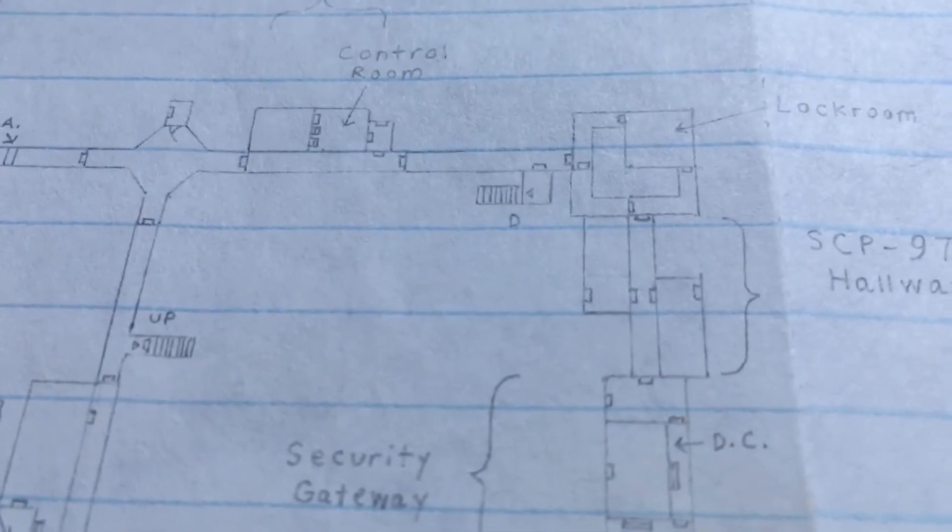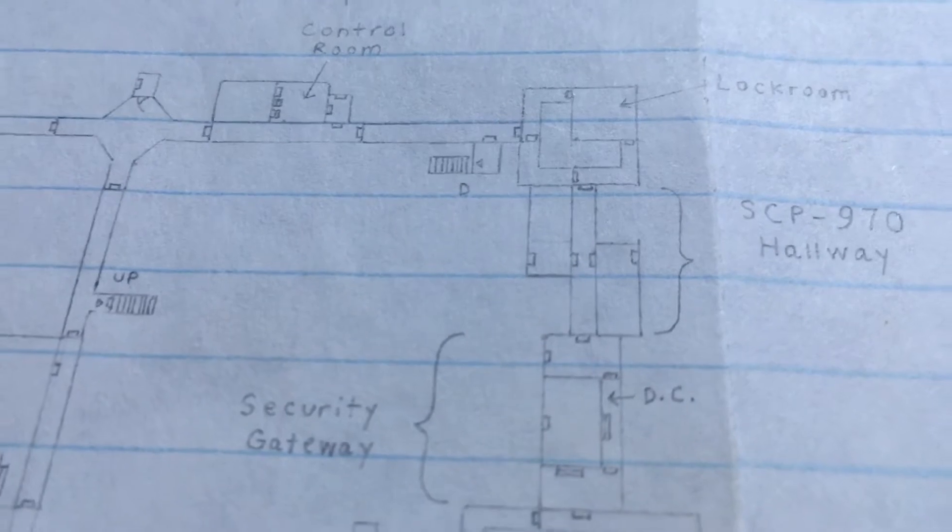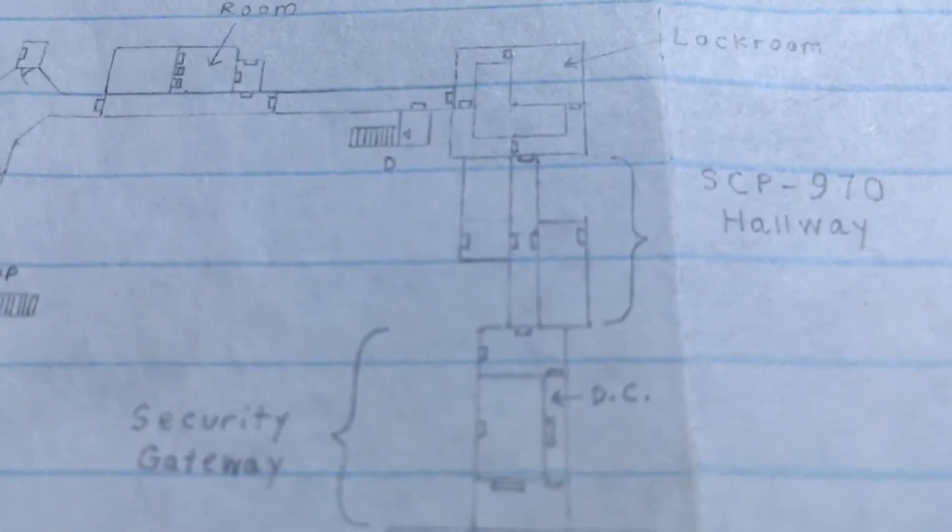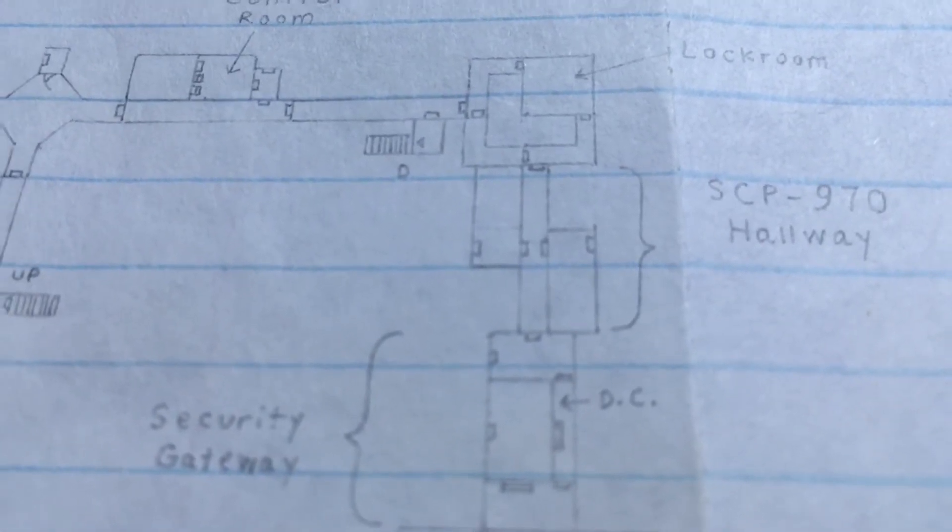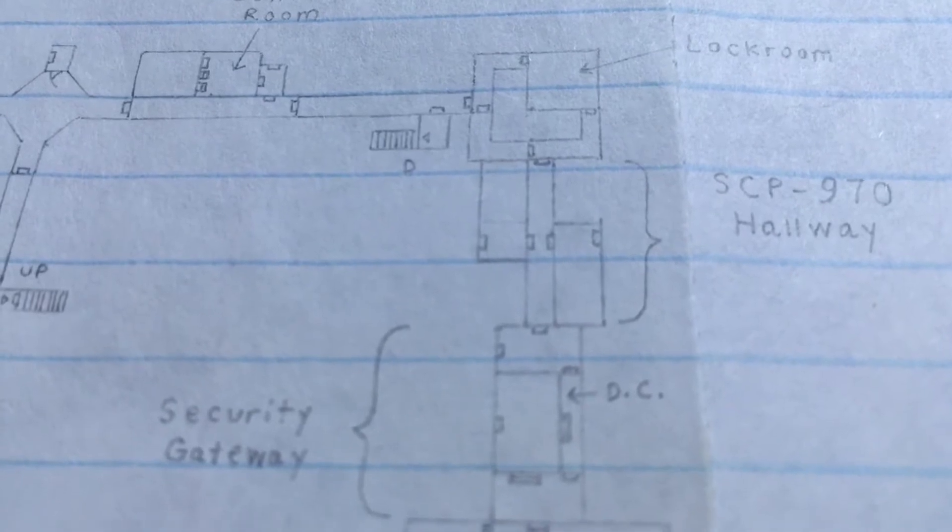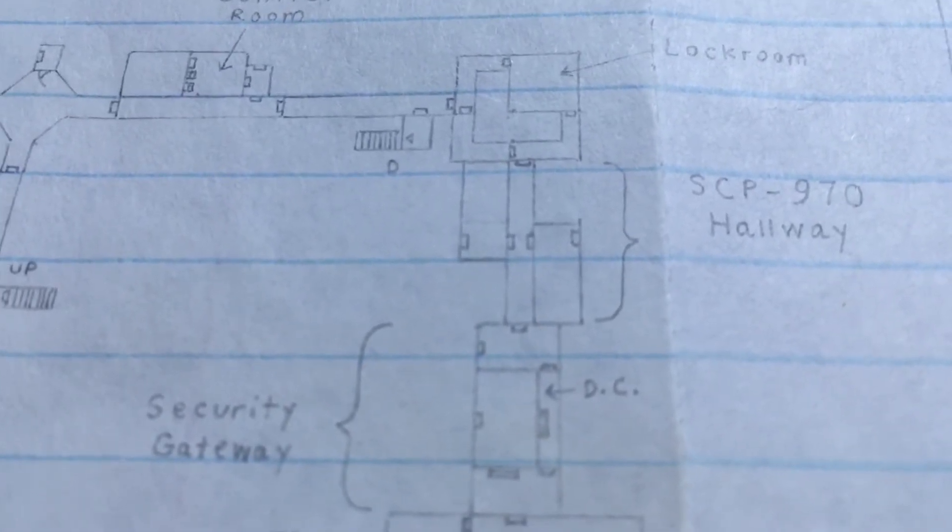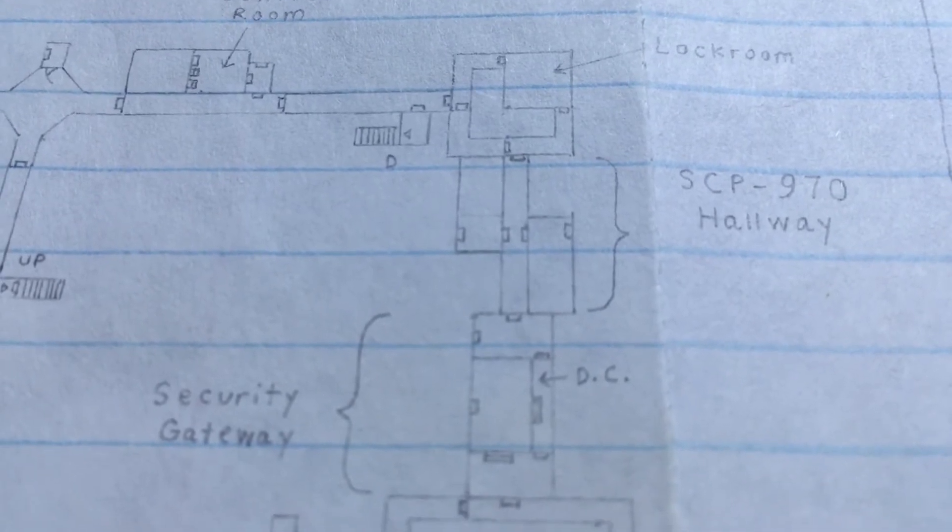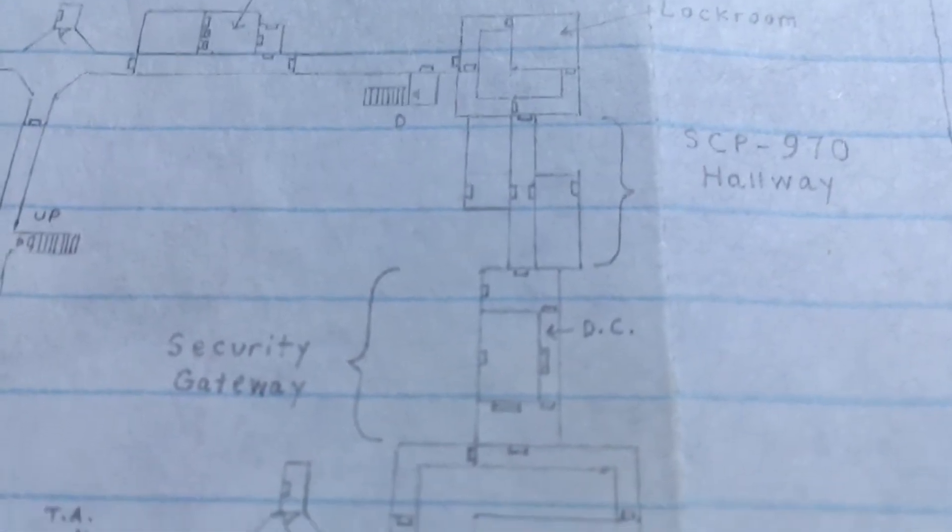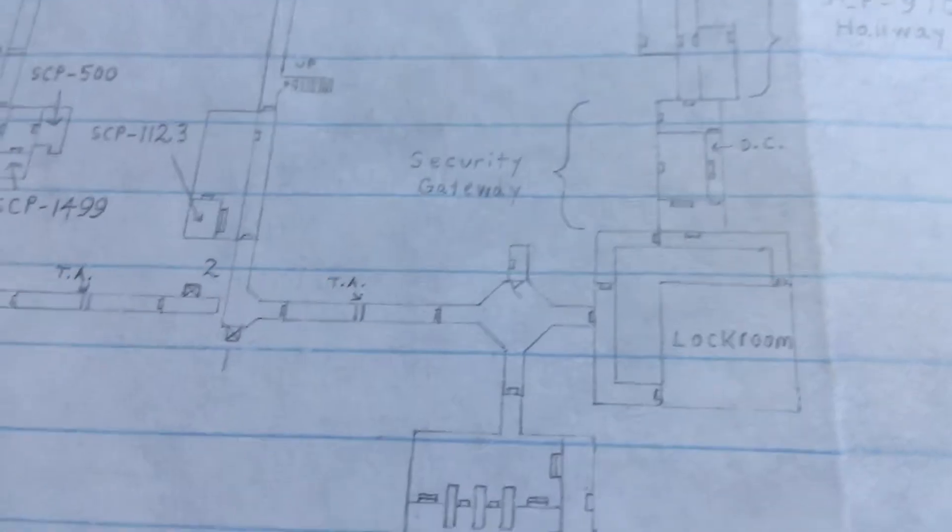But before that, you have stairs leading down to 012's chamber. Again, we'll get to all of that once we get to the other floors. You have SCP-970, where the hallways keep looping forever and ever. Some pretty freaky stuff happens if you just keep going.